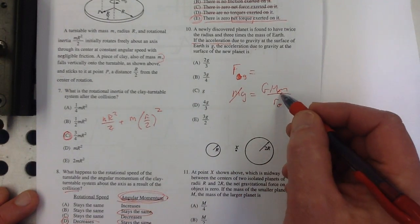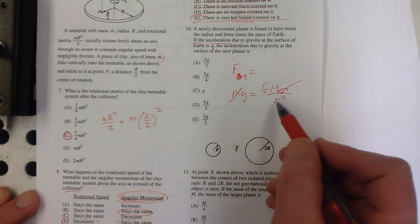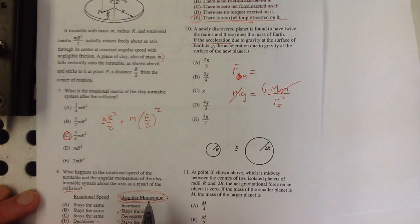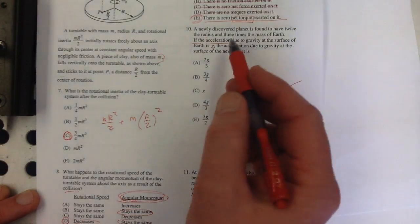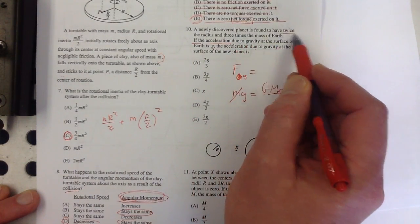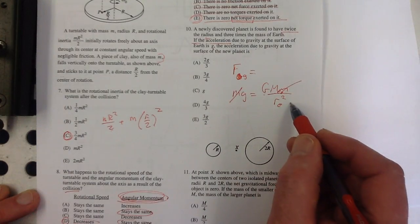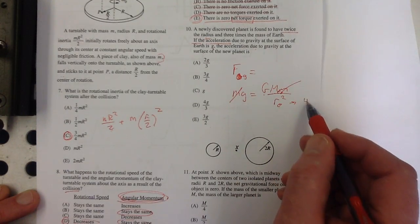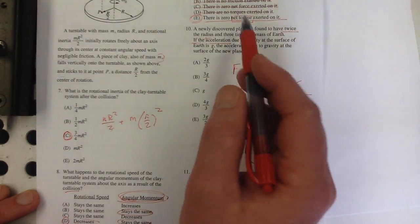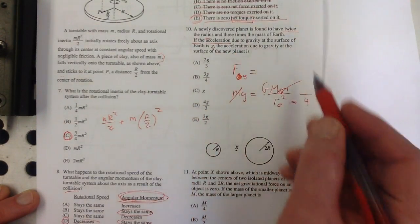So the 9.8 is a result of doing big G times the mass of the Earth over the radius of the Earth squared. So here, this is a proportional reasoning problem. The new planet has twice the radius. So doubling the radius is going to mean a four on the bottom—it's going to decrease by four. And three times the mass.